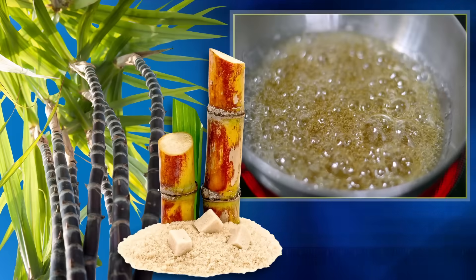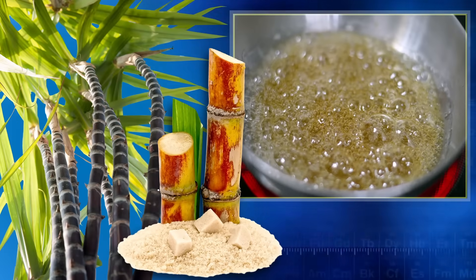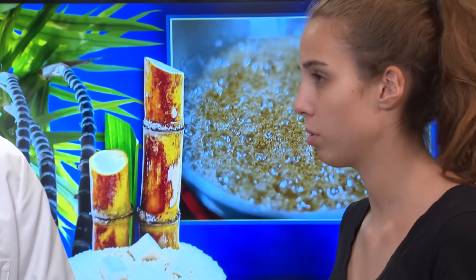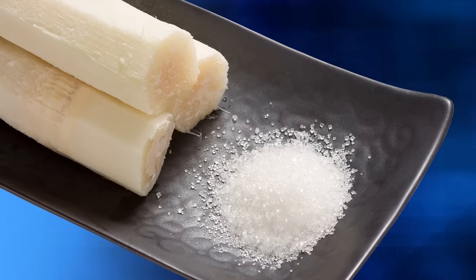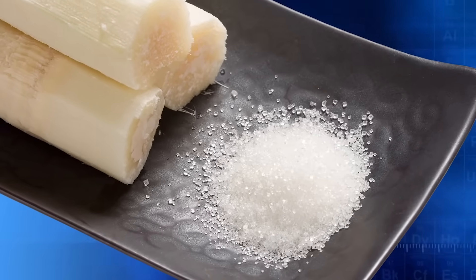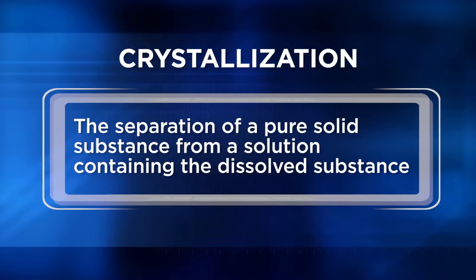What would we do if we want to separate a pure solid from a solution in which the substance is dissolved? For example, if we had a big container of juice from a sugar cane plant and I wanted to collect the solid, pure sugar crystals. If we boil the juice, the water will boil and the vapor will go into the air. Boiling or evaporating from a sugar or salt solution will make the water go into the air, leaving solid crystals behind. That's called crystallization, which separates a pure, solid substance from a solution containing the dissolved substance.